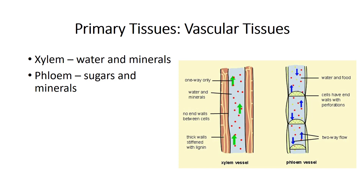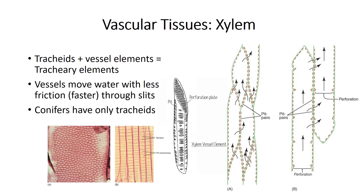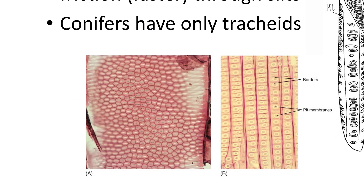Vascular tissues are responsible for the conduction of materials throughout the plant. There are two types: xylem conducts water and minerals, while phloem distributes sugars and minerals. Xylem is dead and hollow at maturity, while phloem remains alive at maturity. Xylem consists of tracheids and vessel elements, collectively referred to as tracheary elements. The strength of the cells is due to secondary cell walls. The strongest tracheary elements have circular bordered pits — the pits are where water flows to the next cell and are weak points in the wall, but this weakness is reduced by a border of extra wall material.